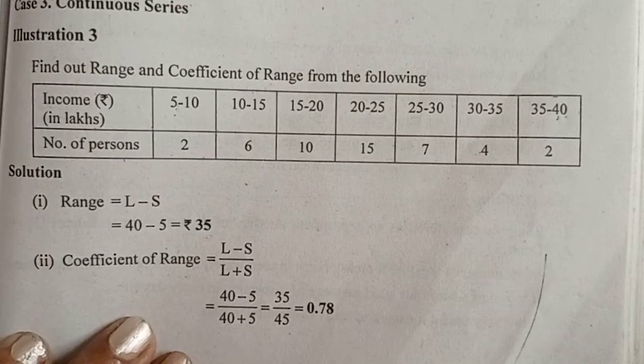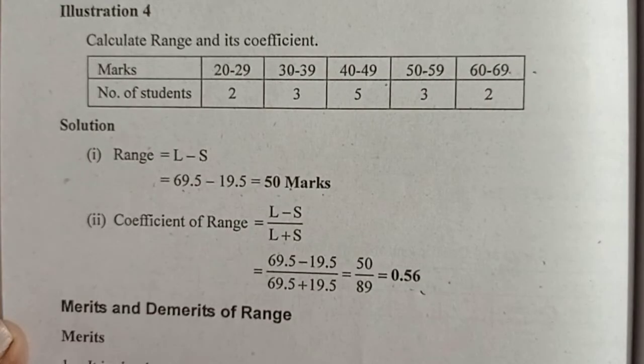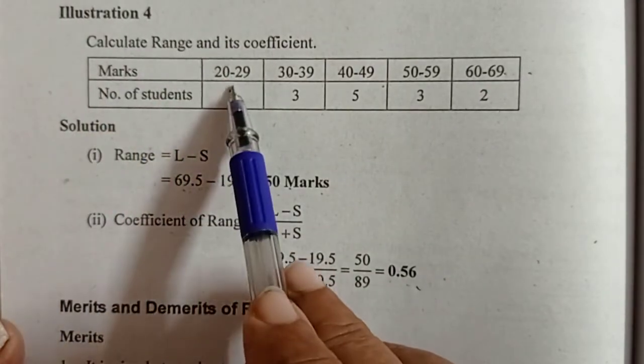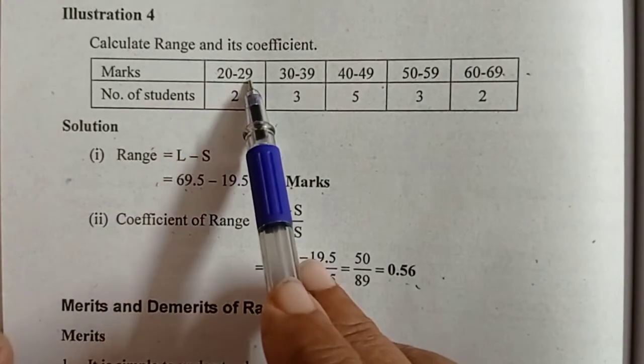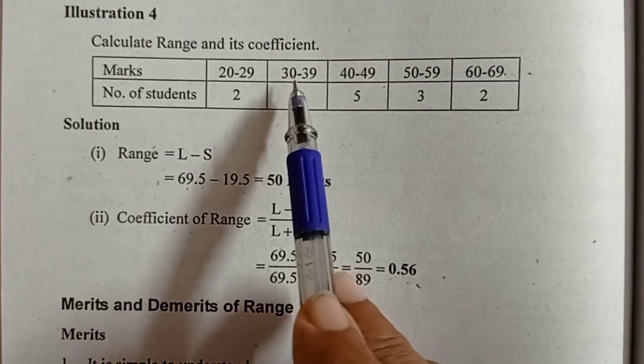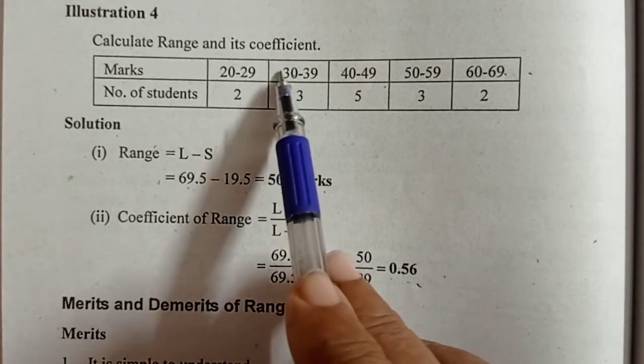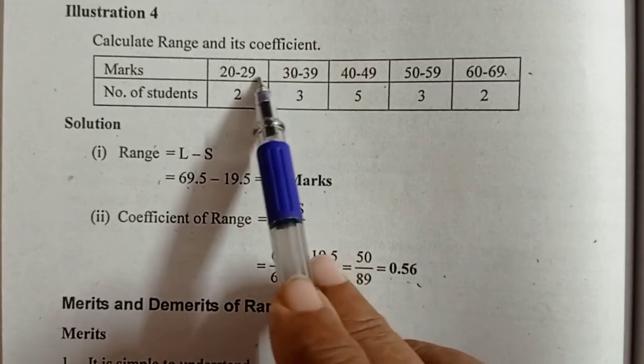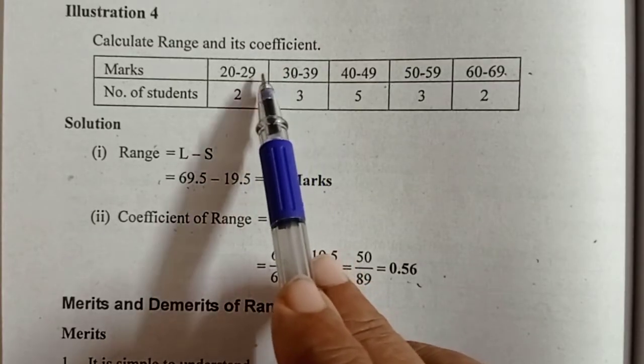Next, discontinuous series. Marks 20 to 29, next class is 30 to 39. There is a gap between these two classes. The numbers 29.5 to 30 are not available.